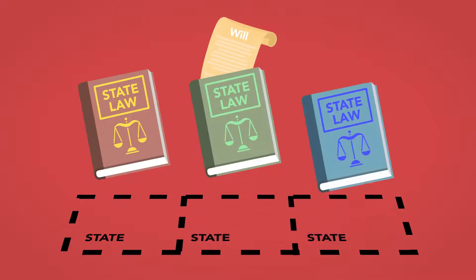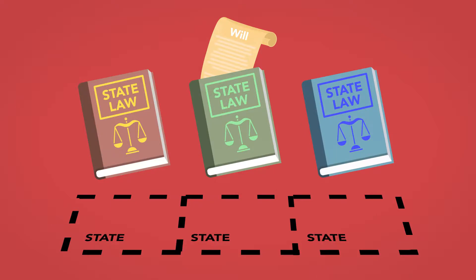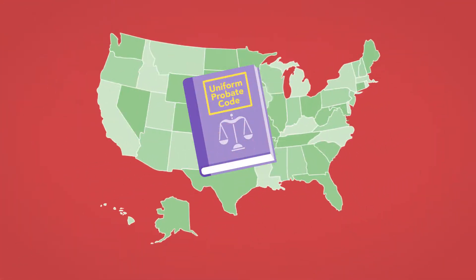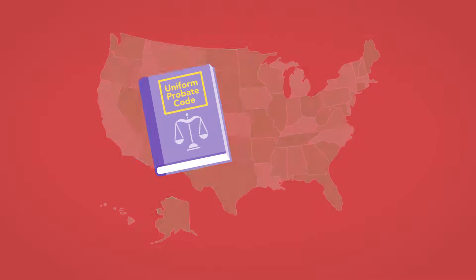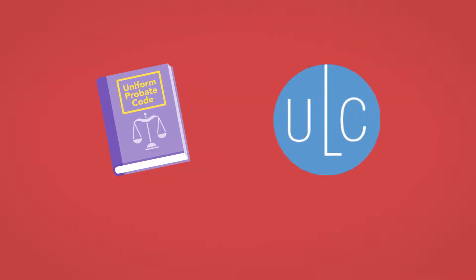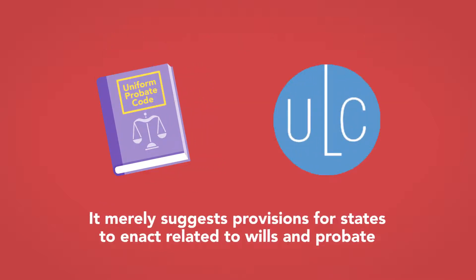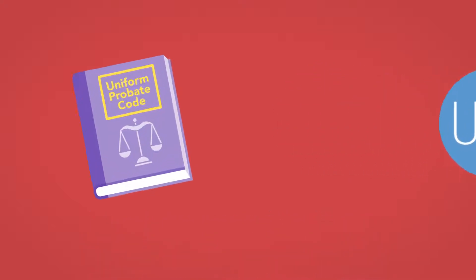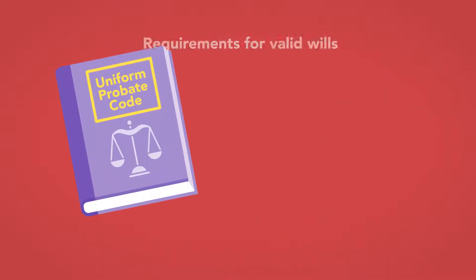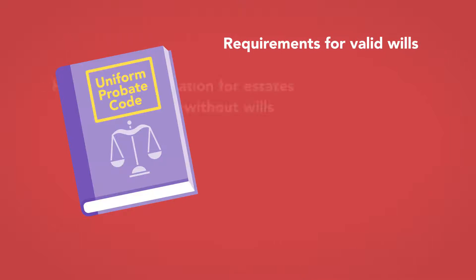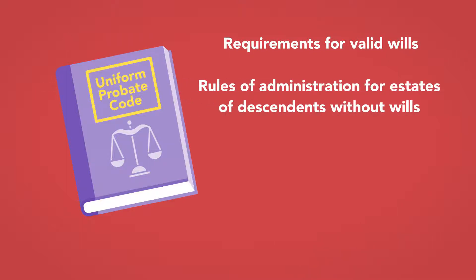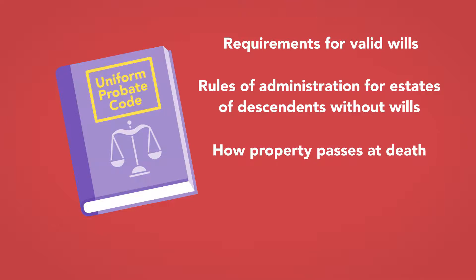State laws vary in their requirements. Many states have adopted some part or all of the Uniform Probate Code. This code, created by the Uniform Laws Commission, is not law — it merely suggests provisions for states to enact related to wills and probate. The code covers such topics as the requirements for valid wills, the rules of administration for estates of decedents without wills, and how property passes at death.